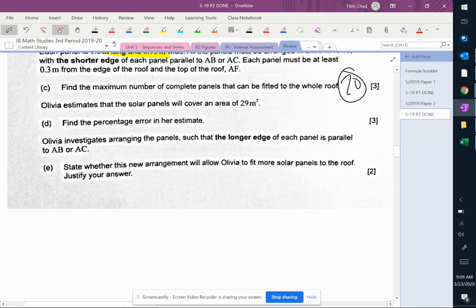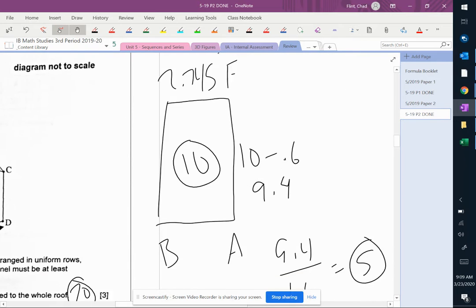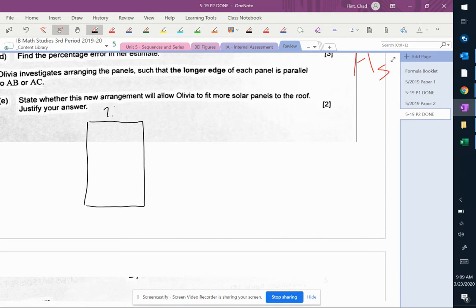For the last part, they're going to turn the panels around. So now what we'd have to do is on our roof, let's grab our numbers again. We had 2.145 and 9.4.